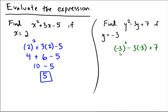So now, first of all, negative 3 squared is negative 3 times negative 3, which is positive 9. Then we have minus 3 times negative 3, which is negative 9, plus 7.